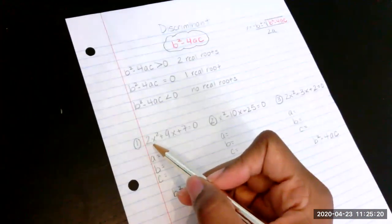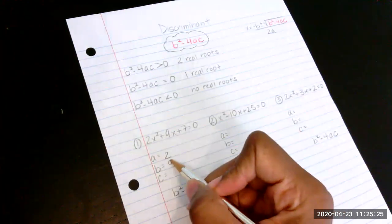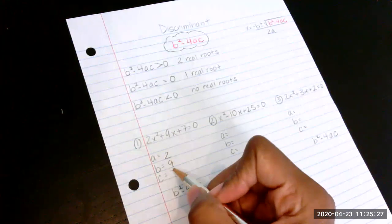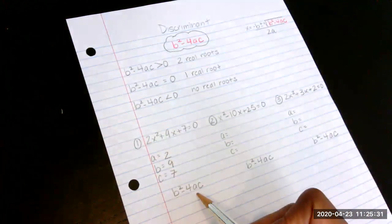We see the a value in this case is 2, the b value is 9, and the c value is 7.